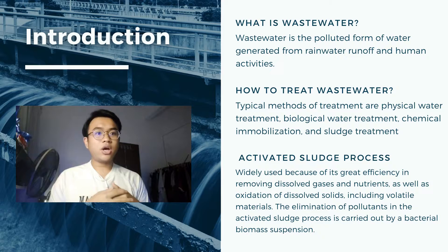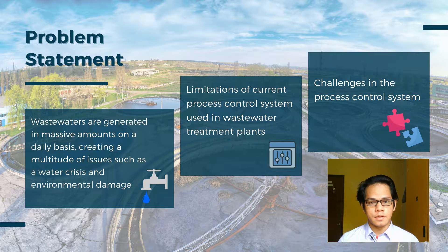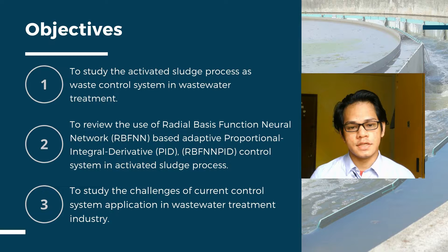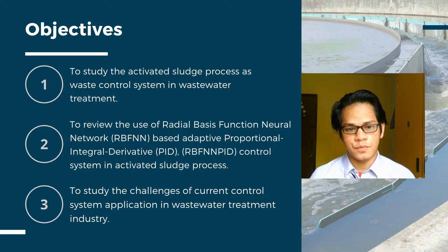The elimination of pollutants in the activated sludge process is carried out by a bacterial biomass suspension. Hi, I am Badru, and I will present the problem statement and objectives. Wastewaters are generated in massive amounts daily, creating issues such as water crisis and environmental damage. Process control systems are a crucial part of the wastewater treatment industry, but there are limitations. The first objective is to study the activated sludge process as a waste control system in wastewater treatment. The second objective is to review the use of radial basis function neural network based adaptive proportional integral derivative (RBF-NPID) control system in the activated sludge process. The last objective is to study the challenges of current control system applications in the wastewater treatment industry.